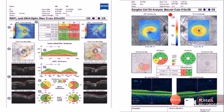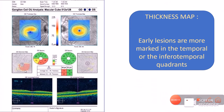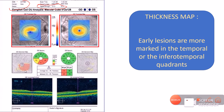Now let us read a printout in which macular analysis is being done. In the macular analysis printout, we first consider patient data, then signal strength — at least more than 5 in Cirrus, more than 15 in Spectralis, and more than 30 in Avanti. Next we consider the thickness maps, which tell us about the thickness of the ganglion cell complex. Red and yellow indicate normal thickness, while blue zones indicate thinning of the ganglion cell complex.